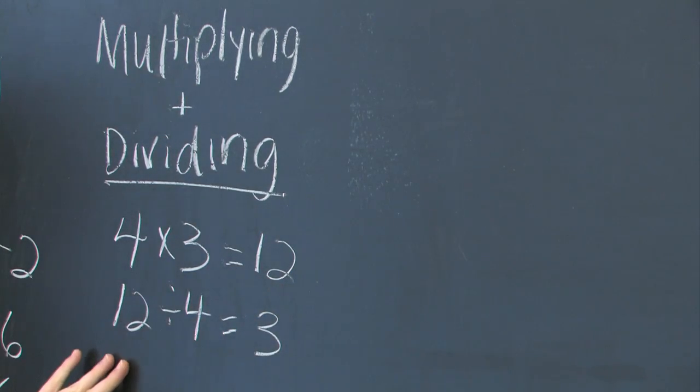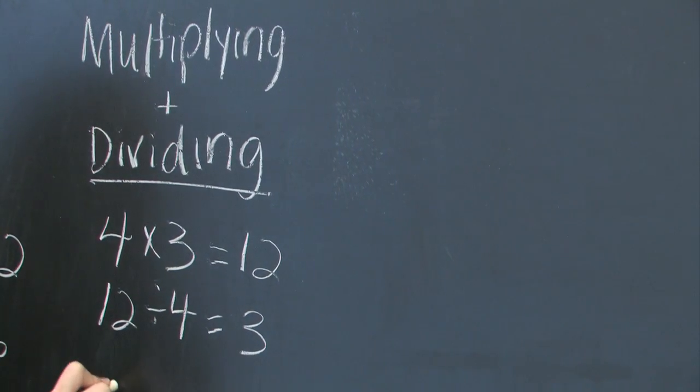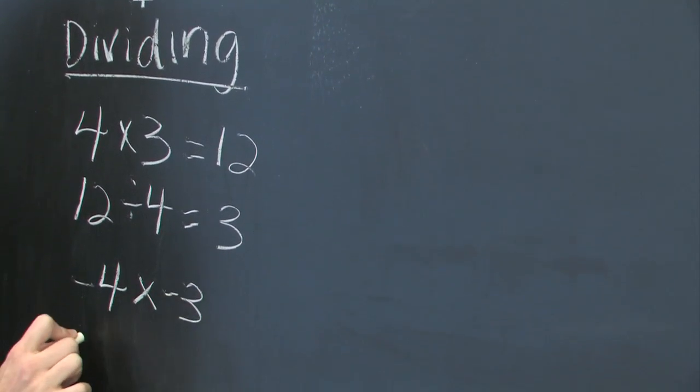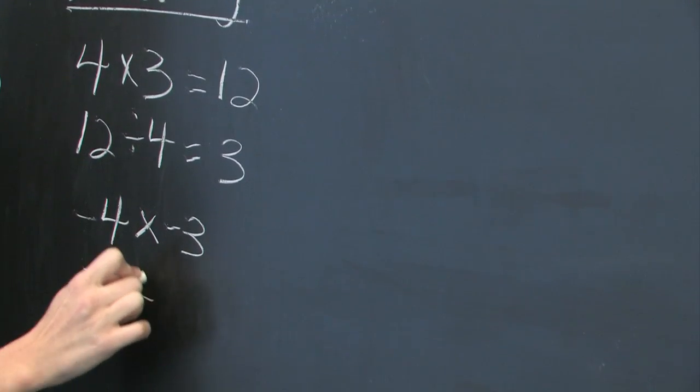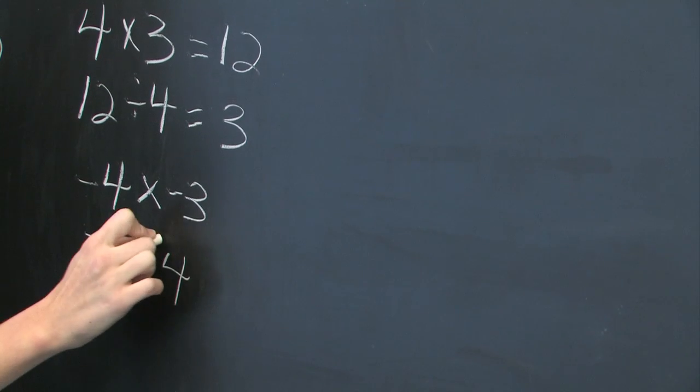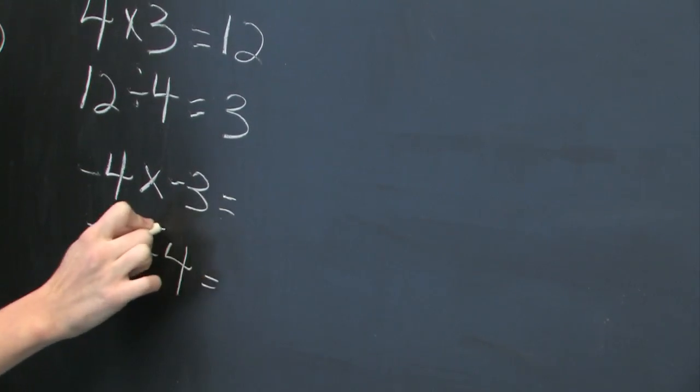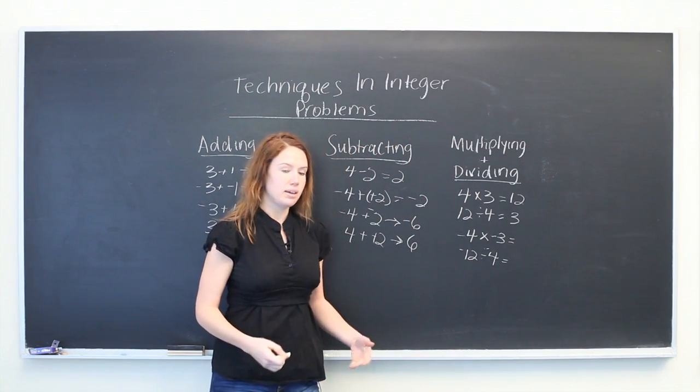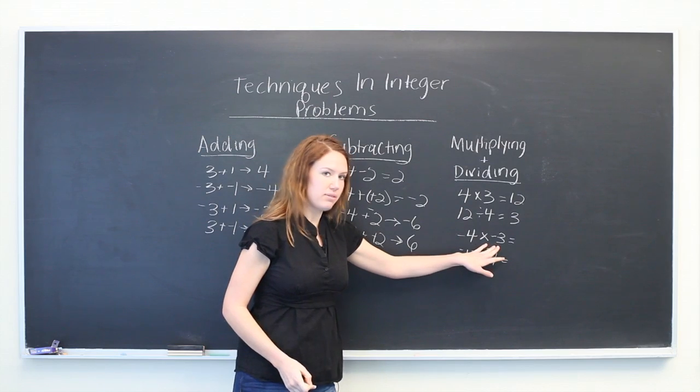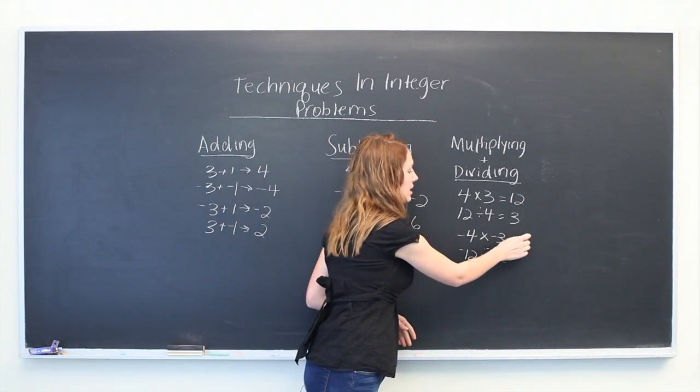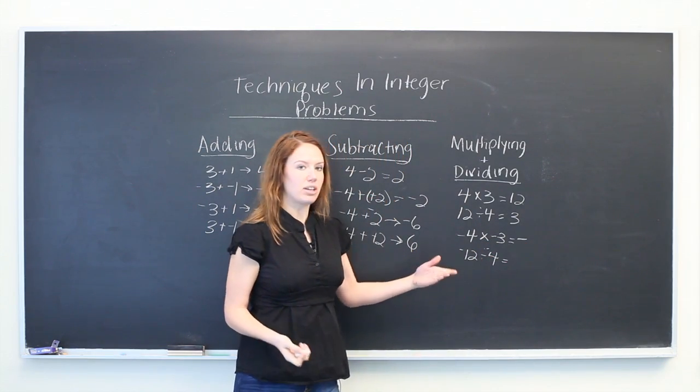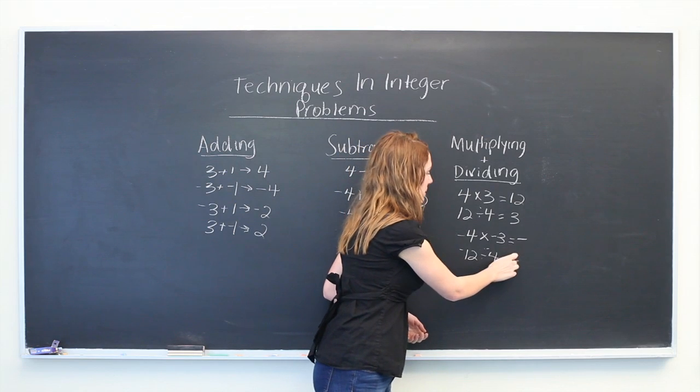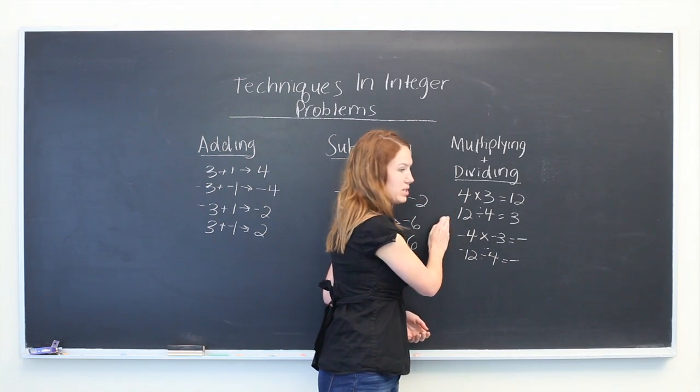If these numbers were all negative, you would see that the rule still holds and that all you do is, since they're both negative, you write a negative sign as the answer and then you multiply them as if they were both positive, as you did here.